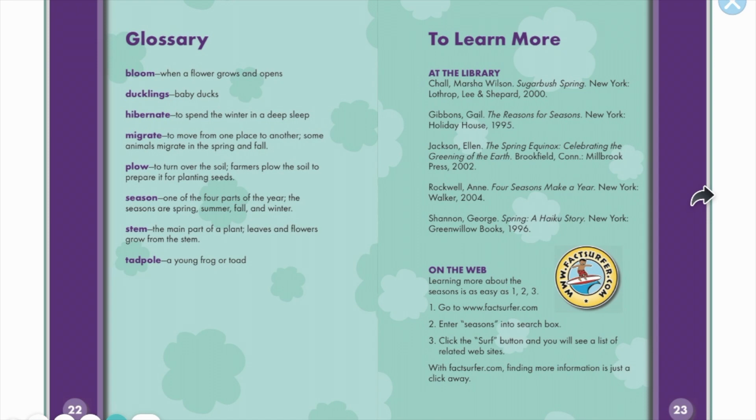Glossary. Bloom: when a flower grows and opens. Ducklings: baby ducks. Hibernate: to spend the winter in a deep sleep. Migrate: to move from one place to another. Some animals migrate in the spring and fall.